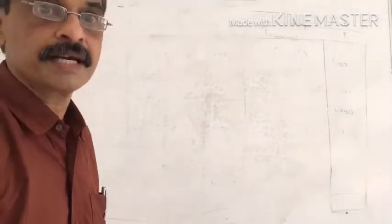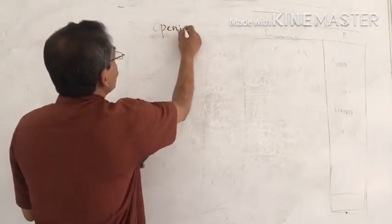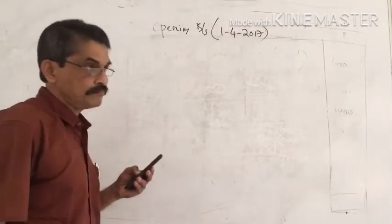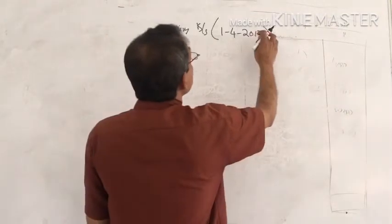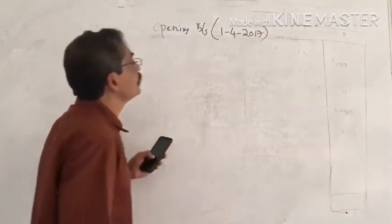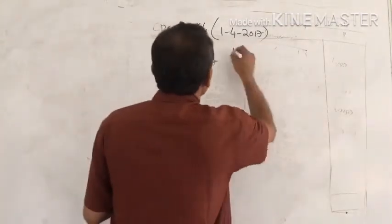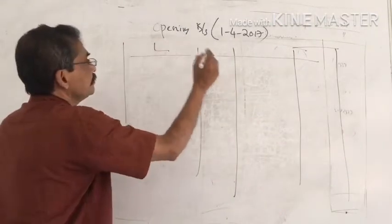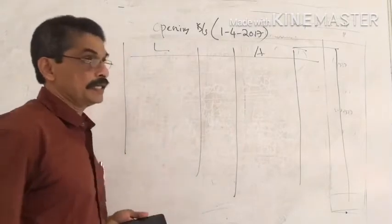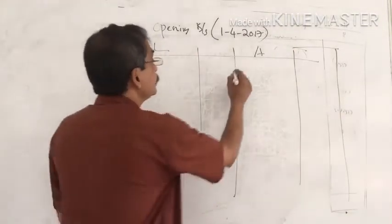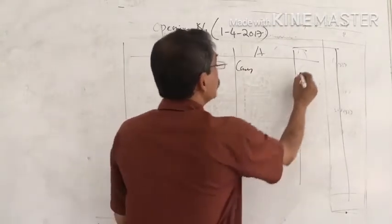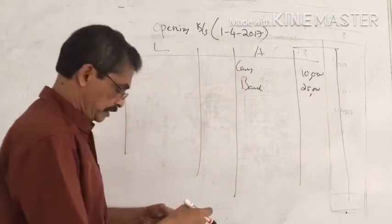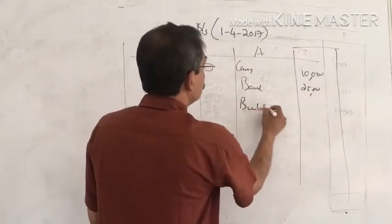Let's look at the opening balance sheet figures. On the asset side: cash is Rs. 10,000, bank is Rs. 25,000, and building is Rs. 65,000. The loan figures are identified: there is a loan liability involved.